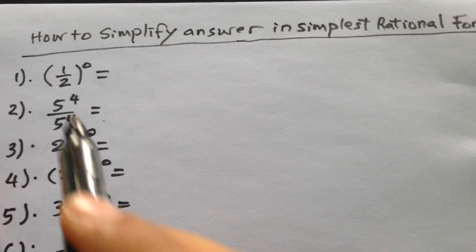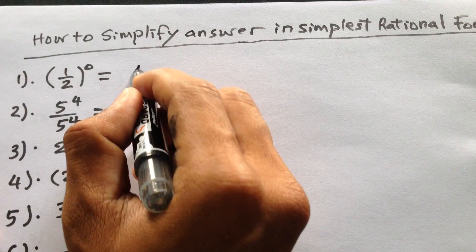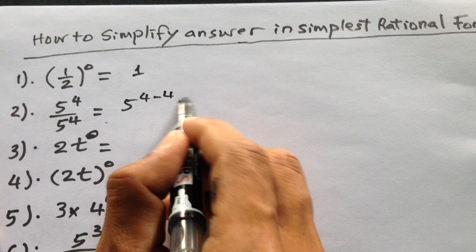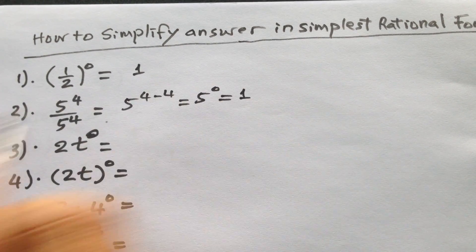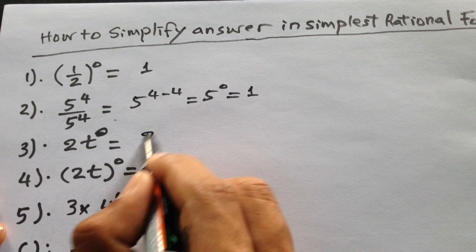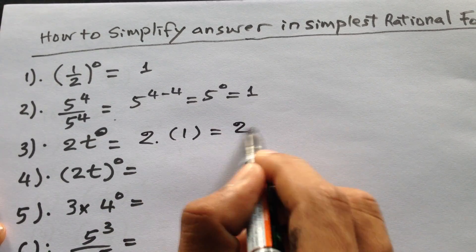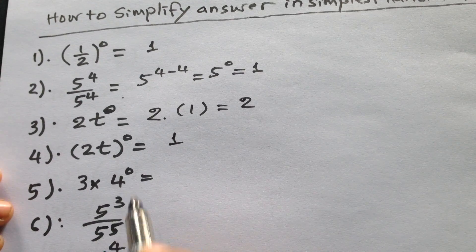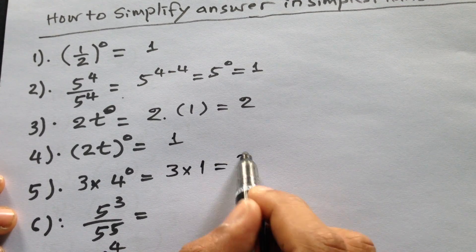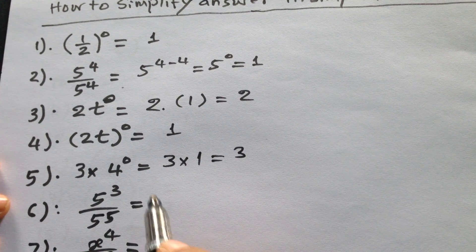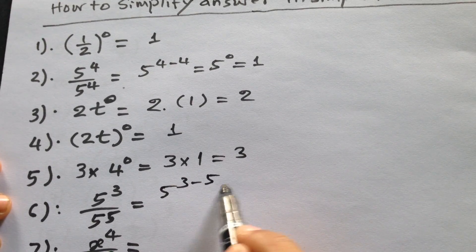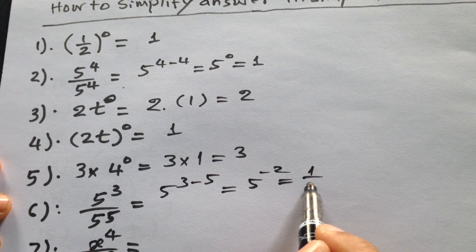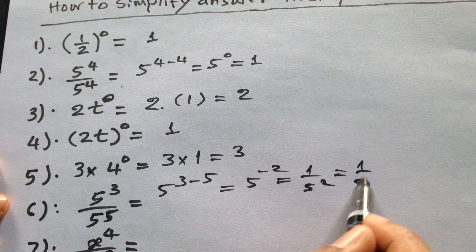What is the answer? So the answer must be 1. How about this — if we have 5 to the power 0, it will be 1. How about this — it will be 3 times 1, it will be 3. How about this — it will be 1. And then 5 to the power 3 minus 5, it will be 5 to the power minus 2, which is 1 divided by 25.